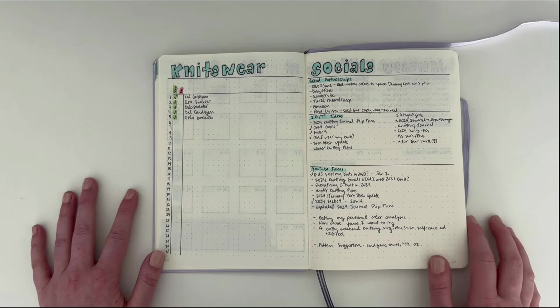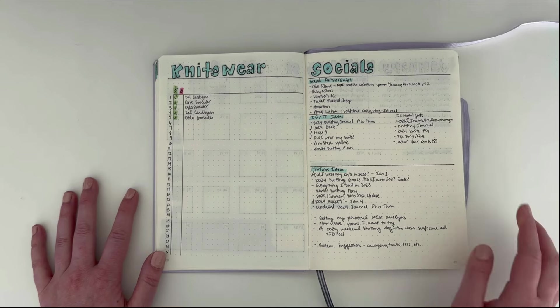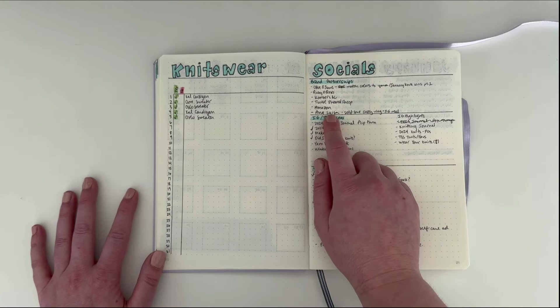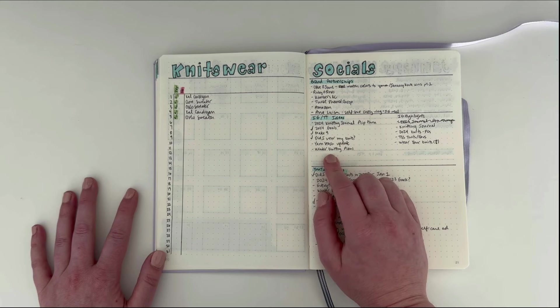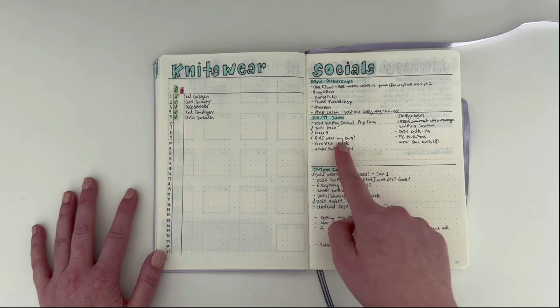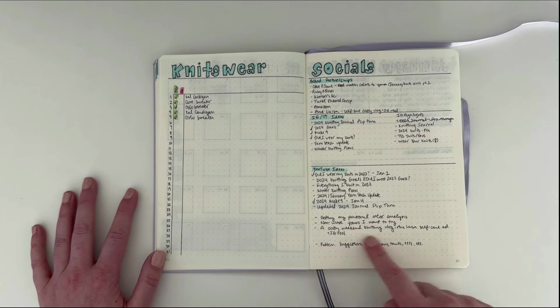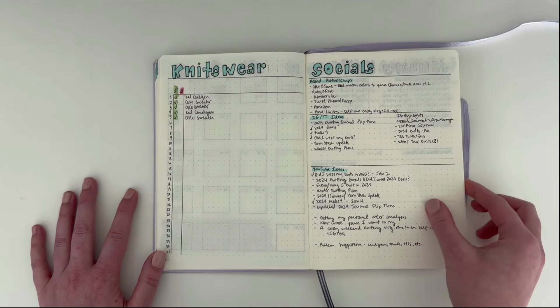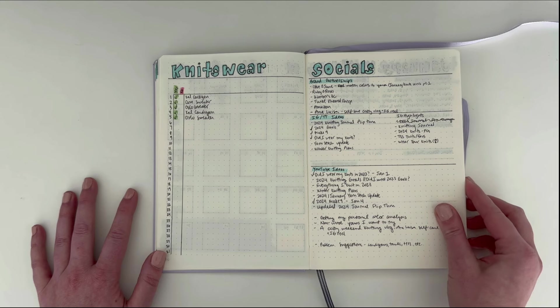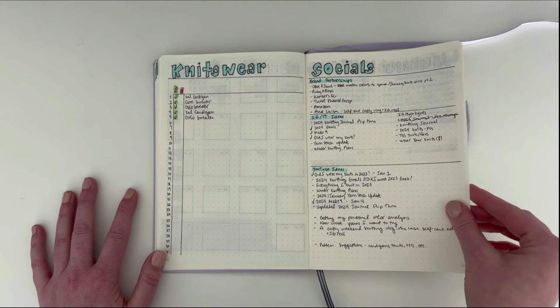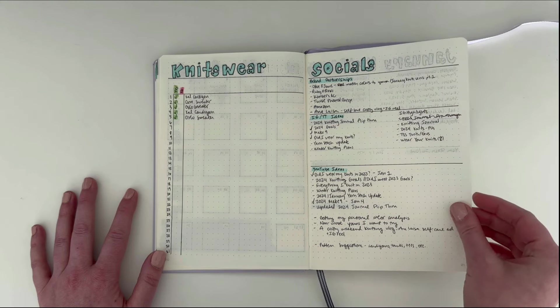The next page is my socials. This is where I keep track of any brand partnerships that I have during the month, any Instagram or TikTok video ideas or post ideas, and YouTube video ideas. I am pretty stacked right now with ideas for the month of January. We'll see how many of these I actually get done, but it would be fun to get through all of them.